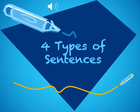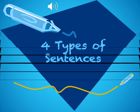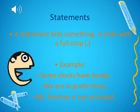Hello Grade 3! We're going to look at the four different types of sentences. Can you think what the four types of sentences are? The first one is a statement sentence. A statement tells us something and it ends with a full stop. Here are some examples: 'Some clocks have hands,' 'We are in Grade 3.'